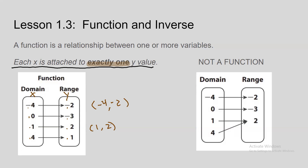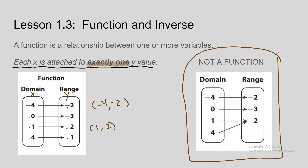This next example is not a function. Wait — actually this is a function, sorry. Even though one and four lead to the same y value of two, that's okay, because each x still leads to exactly one y value.